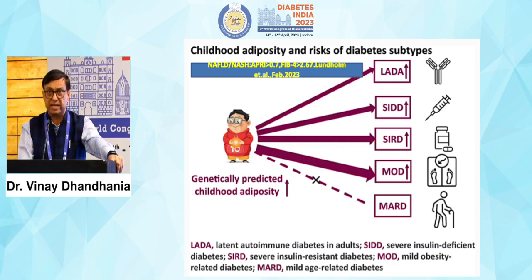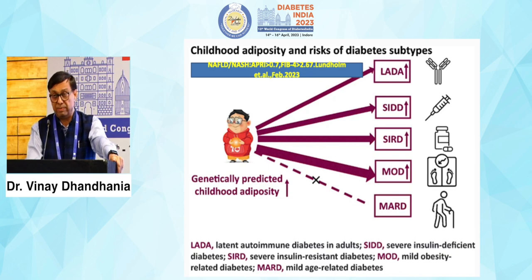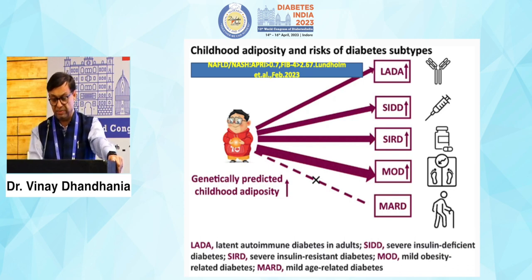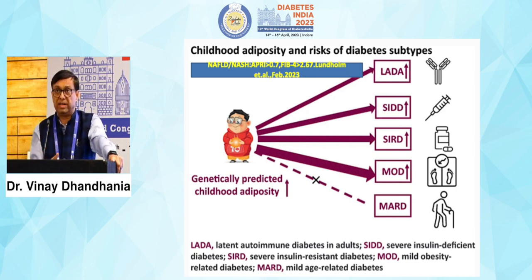There is interesting published data suggesting NAFLD in childhood can actually be a risk factor for type 2 diabetes — almost 30% of obese children with NAFLD have type 2 diabetes. If a pediatrician sees an obese child with fever and cough, they should not only treat the fever and cough, but also counsel them for weight reduction and address obesity as well.